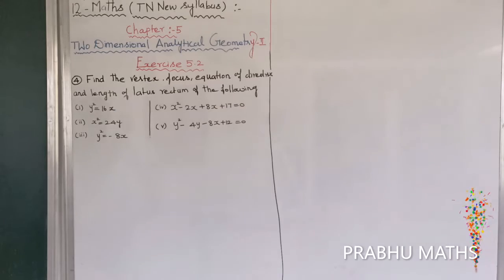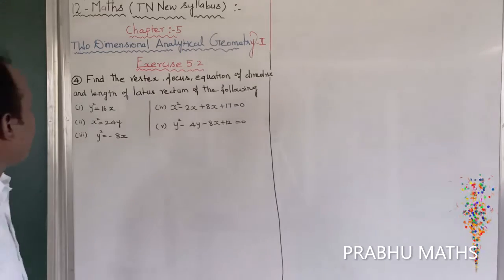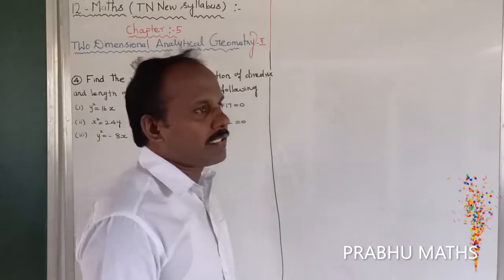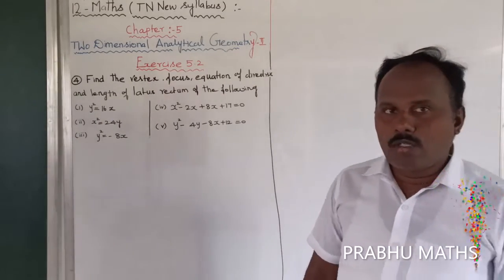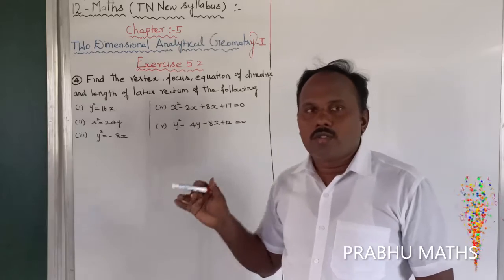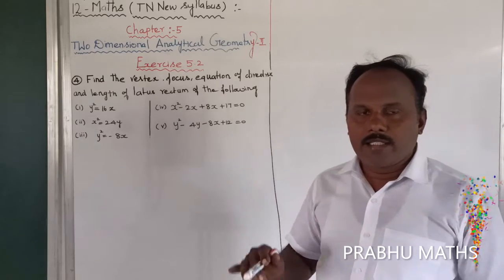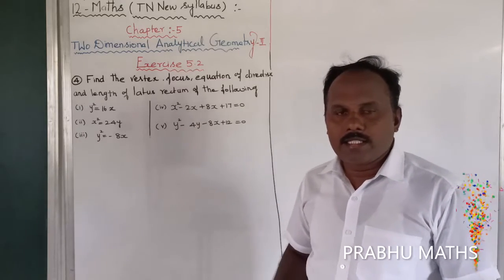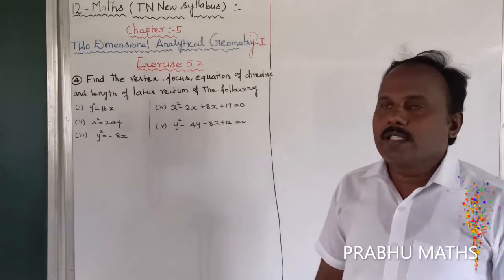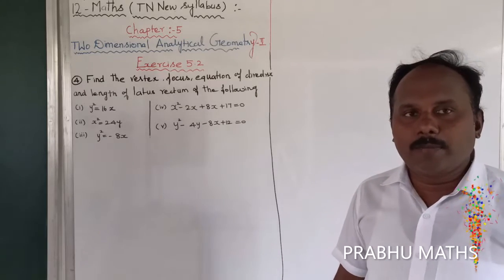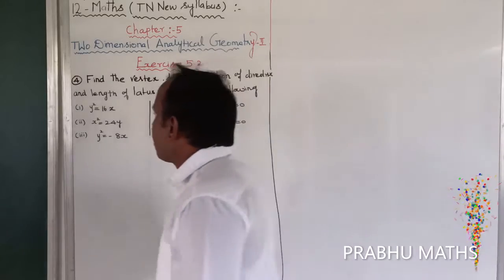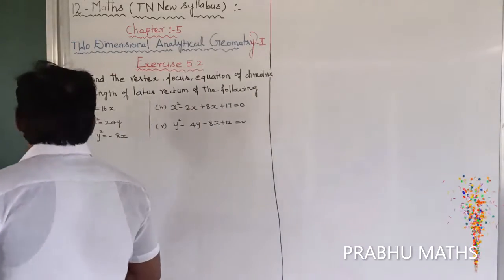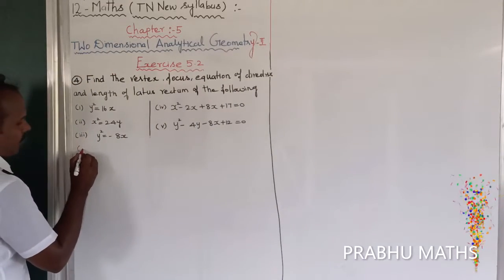We need to find the vertex, focus, equation of the directrix, and length of the latus rectum for the parabola. The first subdivision is y squared equal to 4ax. That is the first standard form subdivision.